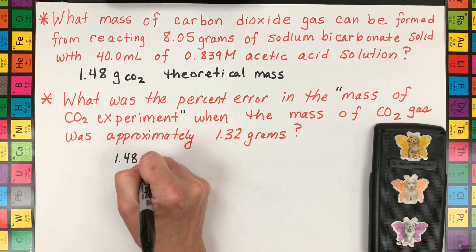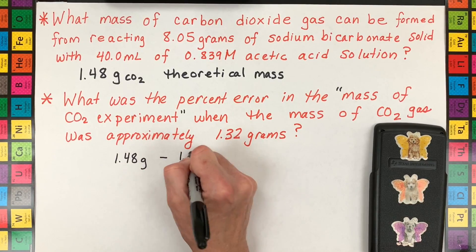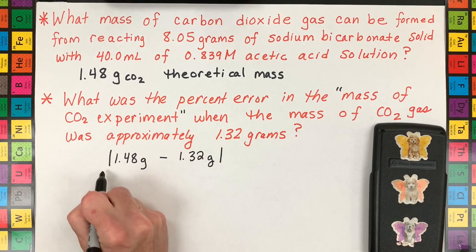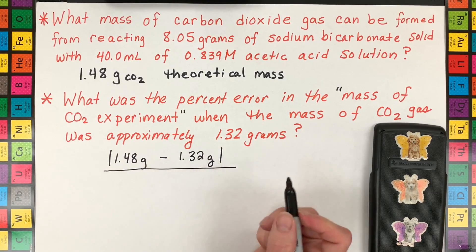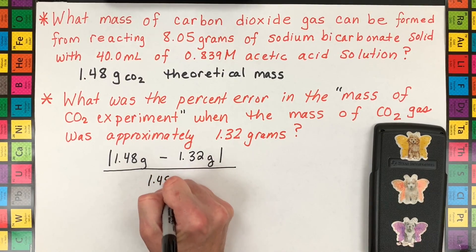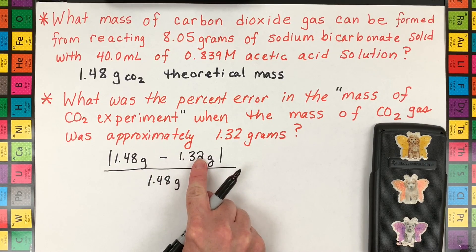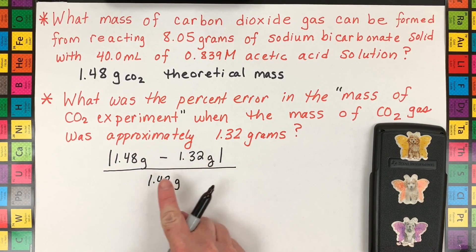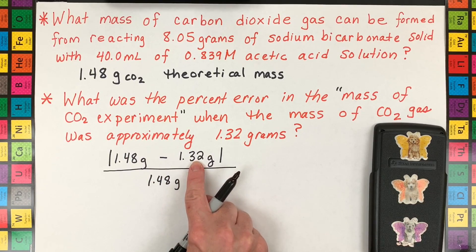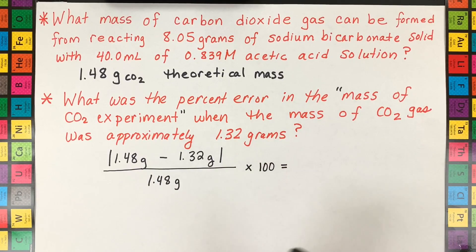So you take 1.48 which is the theoretical, you subtract it from the experimental and sometimes you have to take the absolute value. In this case I only had less than the theoretical, 1.32, and then you divide it by the theoretical. So that's the formula: theoretical minus the lab divided by the theoretical. Sometimes these are called accepted and this is called experimental. So make sure you have your formula for percent error, common formula to use in chemistry.